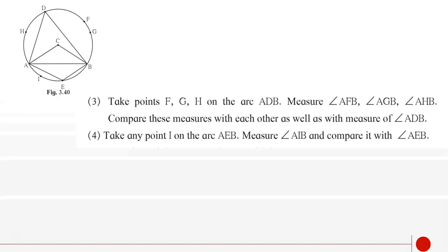Take points F, G, H on the arc ADB and measure angle AFB, angle AGB and angle AHB. Compare these measures with each other as well as with the measure of angle ADB.